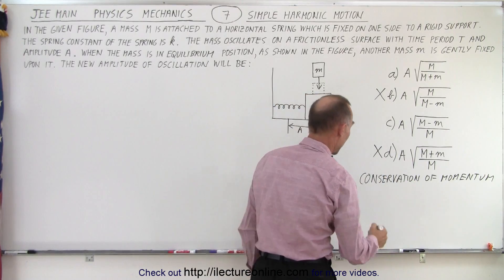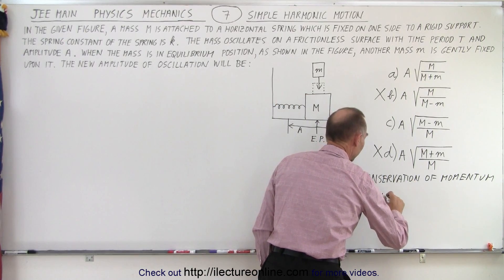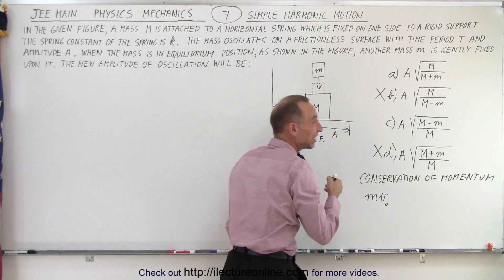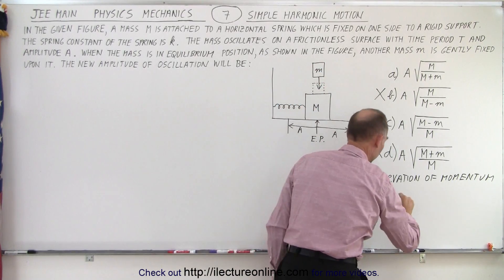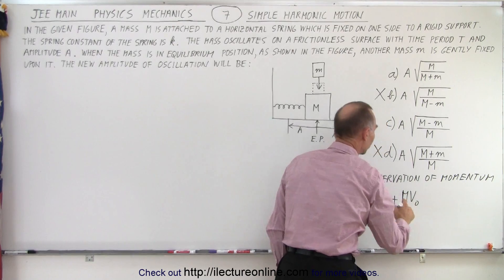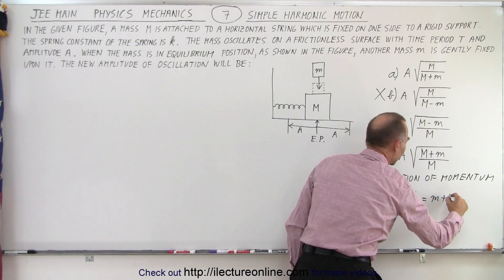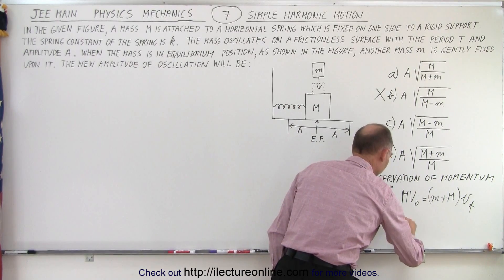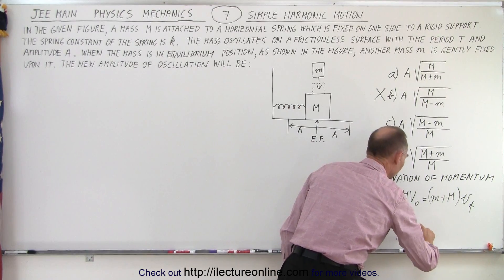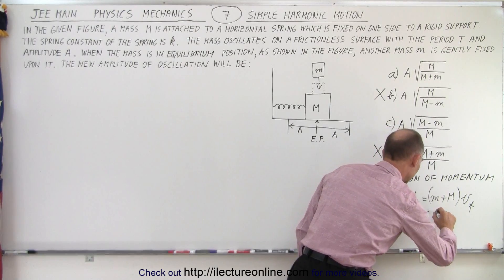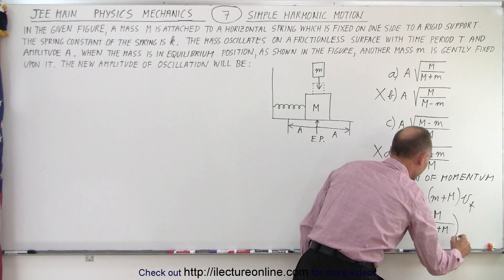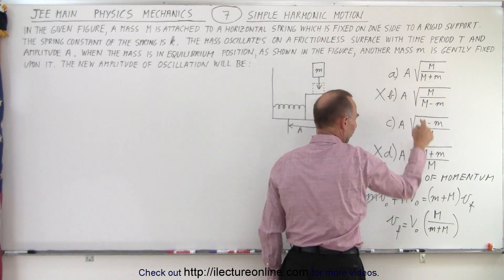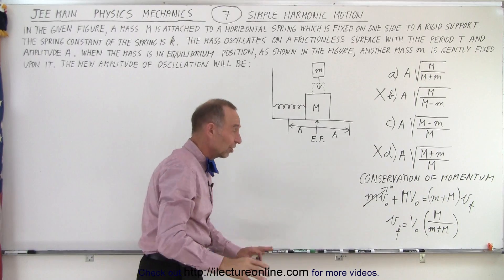So if we use that principle, what do we get? Well that means that the momentum before equals the momentum after, so the small mass times its initial velocity, but notice we only care about the velocity in the x direction, so the small mass has no velocity in the x direction initially, so that goes to zero, plus the big mass with its initial velocity, that must equal the sum of the two masses with the final velocity. And of course this goes to zero, which means that the final velocity is equal to the initial velocity times m divided by m plus m.